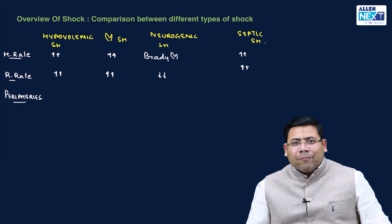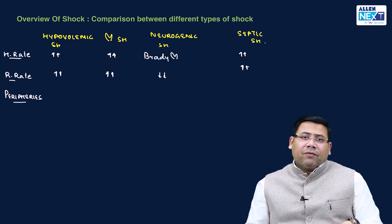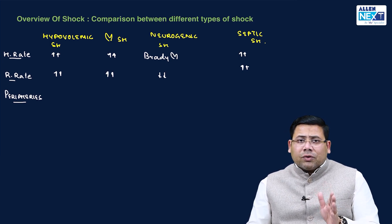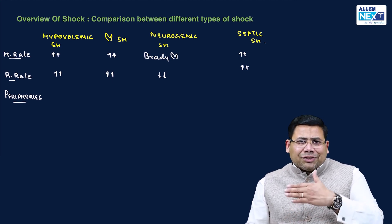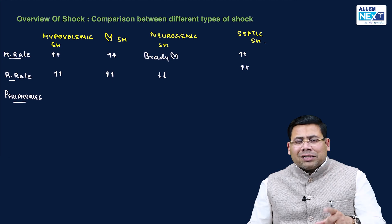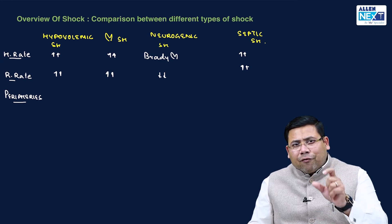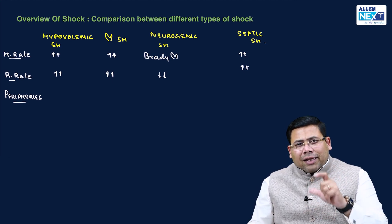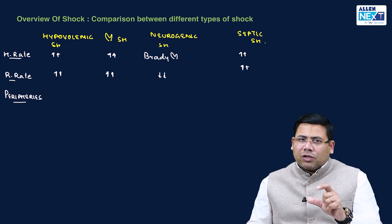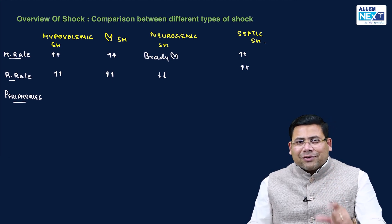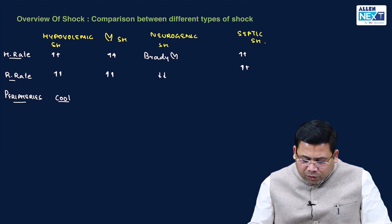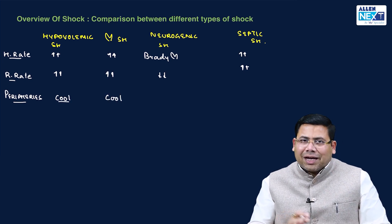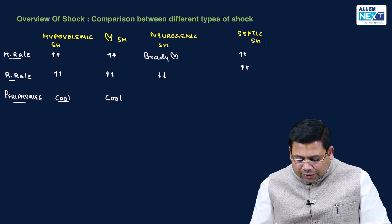The next parameter is the extremities, or peripheries. There is a rule of shock: save the vital organs. Blood is actually siphoned off from the peripheries and shunted to the vital organs. So in peripheries, there will be increased vascular resistance and vasoconstriction, resulting in less blood flow — cool extremities in both cardiogenic and hypovolemic shock.